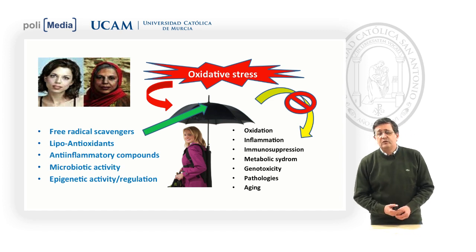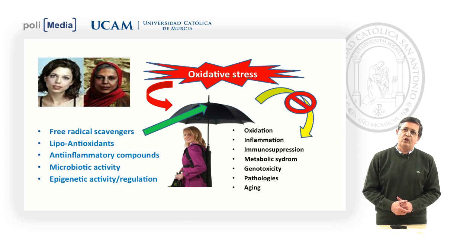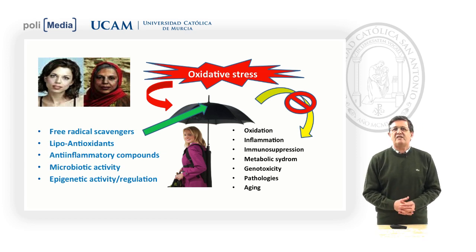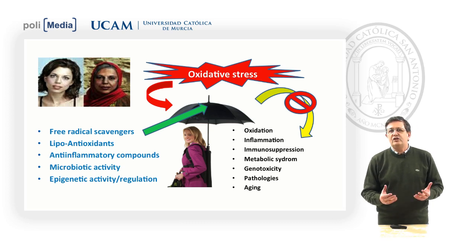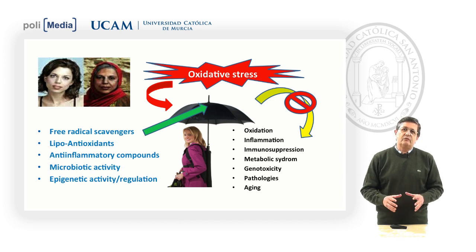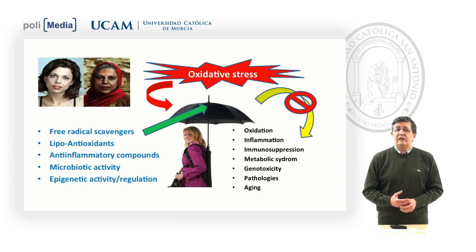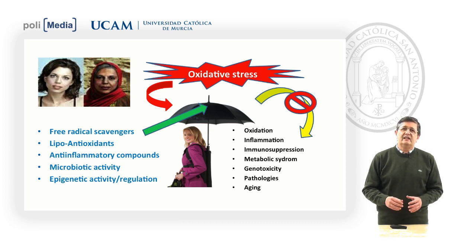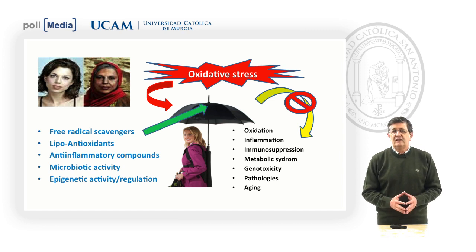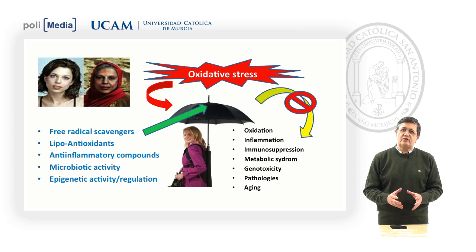In the first slide we try to start the presentation with the general concept of oxidative stress. Probably 40 years ago, the concept of oxidative stress was an excessively general concept, not related with specific pathologies. But day by day, over the last 16 years, scientists developed the idea that this concept is also related with the world of pathologies. Related to aging, we have different elements that contribute to oxidative stress: free radical scavengers, lipo-antioxidants, anti-inflammatory compounds, microbiota activity, and epigenetic regulation. These tools are probably needed to control oxidative stress — it is a special umbrella for these pathologies.